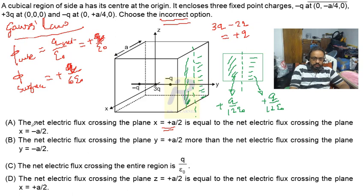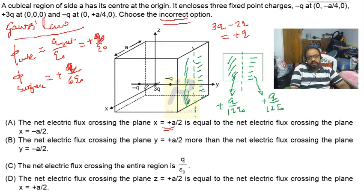From option A, the net electric flux crossing the plane x = +a/2 is equal to the net electric flux crossing the plane x = -a/2. Taking symmetry across the x-axis, the net electric flux on each side should be the same — which is what option A states. So option A is correct.